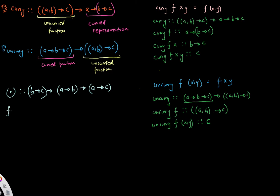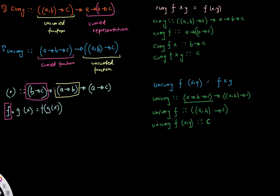In my previous video I defined this mathematically: F function-composition G of X equals F applied to G of X. You can think of the function going from B to C as belonging to F, and the function going from A to B as belonging to G. Composing the two functions gives you back a new function going from A to C.